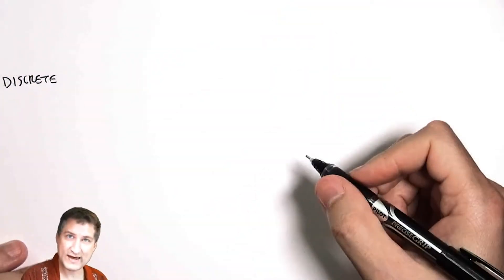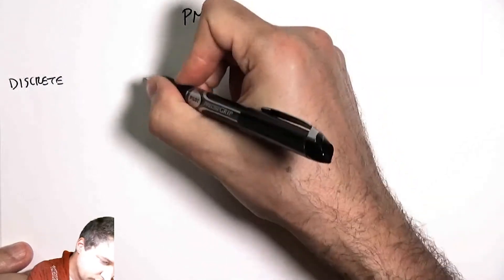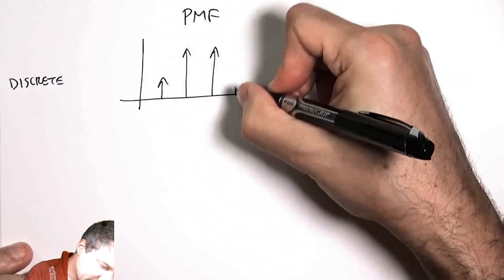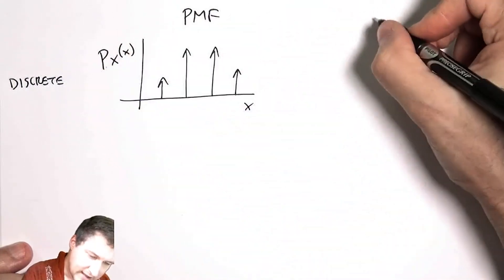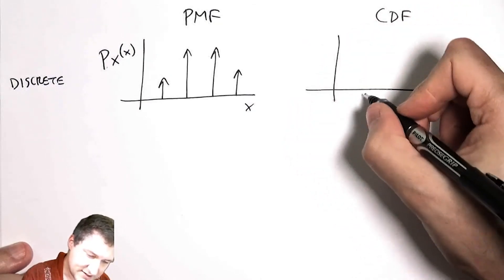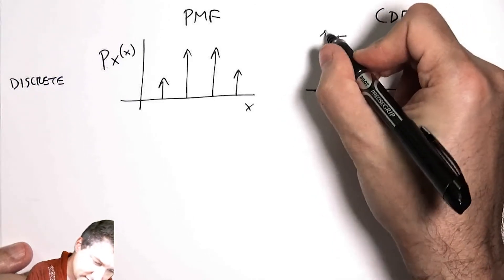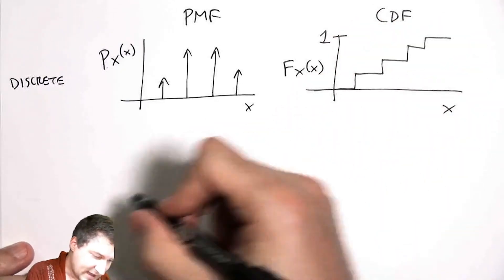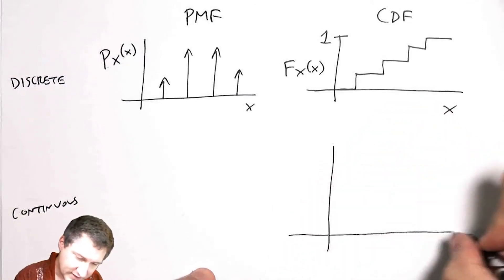In the discrete world now, we have the concept of the PMF, which is basically the probability of getting any particular outcome, little p. And then we integrated that to get the CDF, which in a discrete world is like this kind of stair-steppy function.